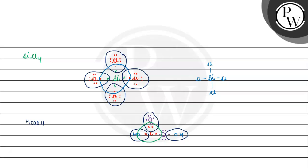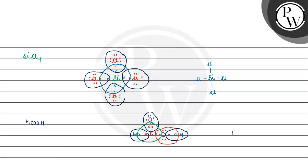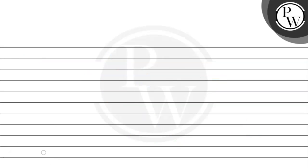Looking at the carbon atom, we can see 8 electrons are present around it. So we have the complete Lewis dot structure for formic acid.